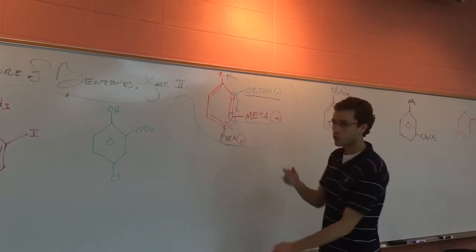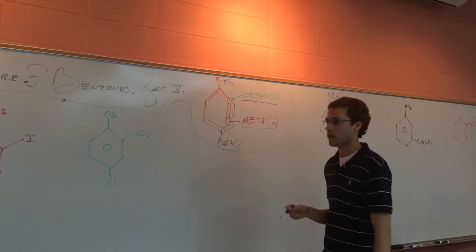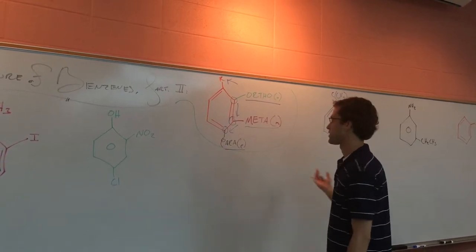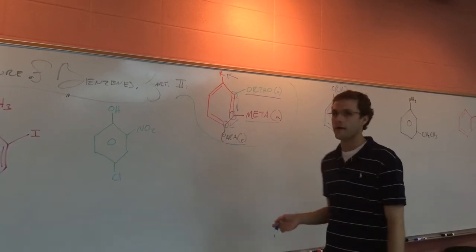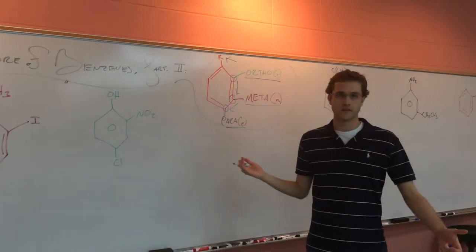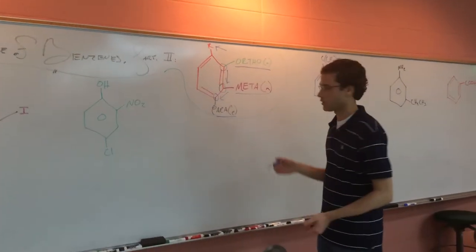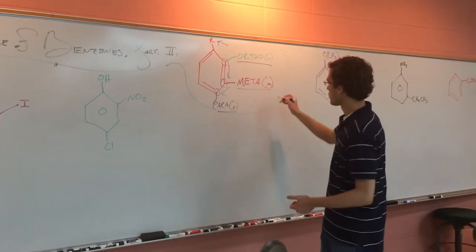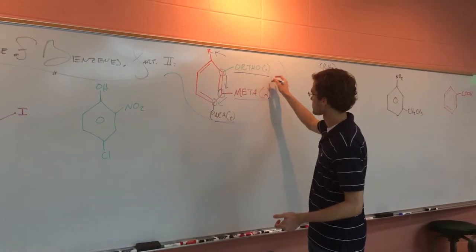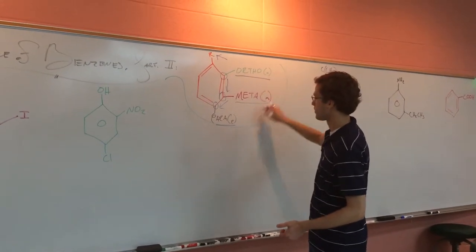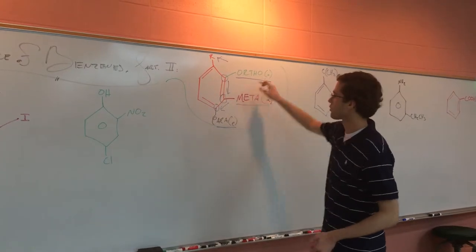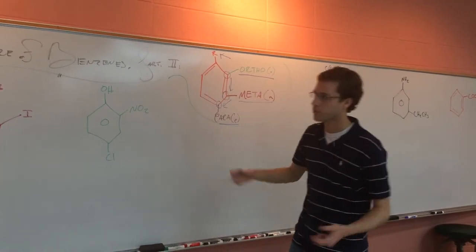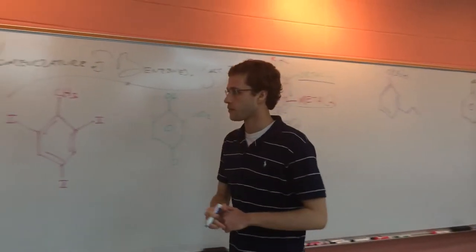You can shorten that — you can write out, like if we had meta-bromobenzene or something like that, you can write that out with 'meta', or you can just write a lowercase O, M, or P for ortho, meta, and para. So let's go through some examples here.